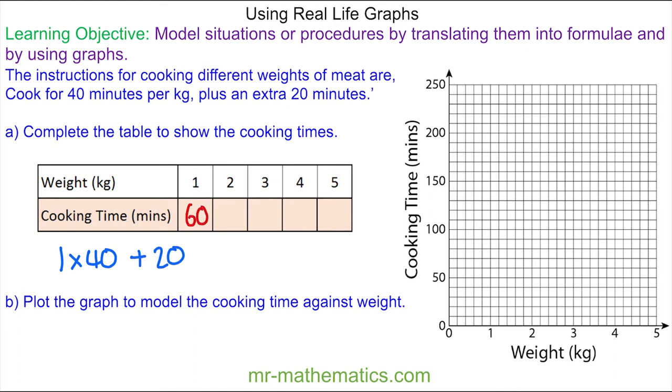And then for two kilograms we've got two lots of 40 plus 20, so 80 plus 20 is 100. And we should be able to see a pattern where we are adding 40 minutes every time. So we have 140, 180, and then 220. And now we can plot these points on a grid.